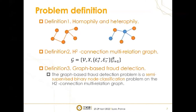Let's see some important definitions in our work. For homophilic and heterophilic, as the two pictures show, the color of nodes represents a category. If the two nodes connected by an edge belong to the same category, then the edge is homophilic. Otherwise, the edge is heterophilic. We formulize the fraud detection as an H2 connection multi-relation graph. V represents the nodes, X is the node features, Epsilon R-plus is the homophilic connections in R's subgraph, and Epsilon R-minus is the heterophilic connections. It is worth noting that the homophilic and heterophilic connections are learned through the model.